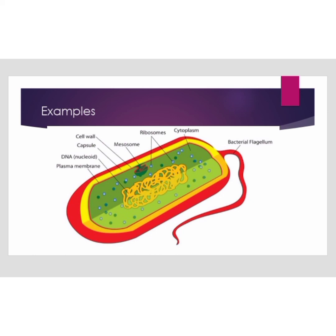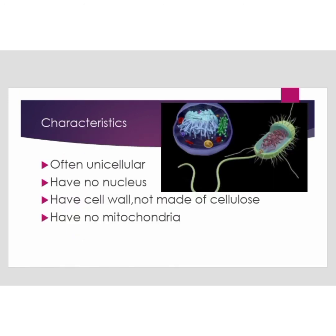The characteristics of Prokaryotes: they are often unicellular — single-celled organisms. They have no nucleus. They have a cell wall, but it is not made up of cellulose, unlike some Protista which have cellulose cell walls. They also have no mitochondria.